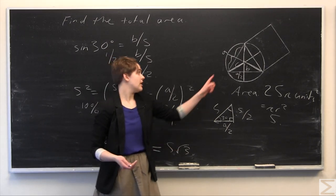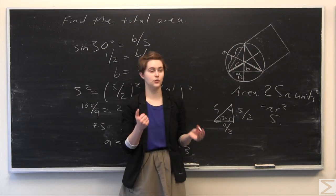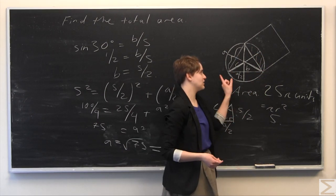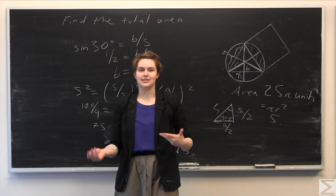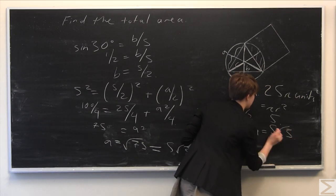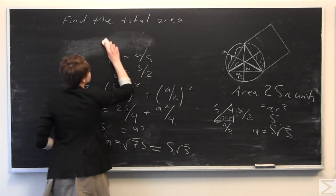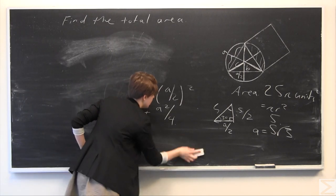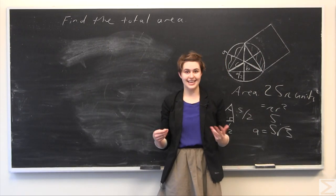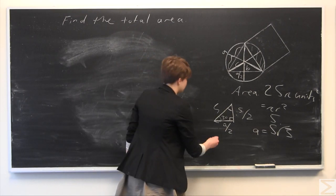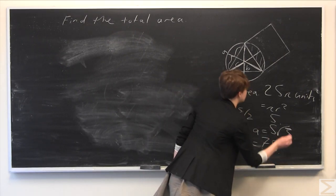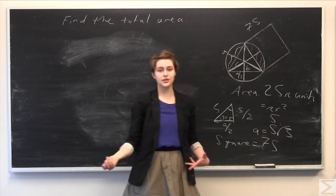Now we can find the area of the triangle and the area of the square. We also need to solve for each of these little sectors, because when we add the areas we can't just add the circle plus the square — we'd be double counting the overlapping section. So a = 5√3, and the area of the square equals (5√3)² = 75. The circle has area 25π.